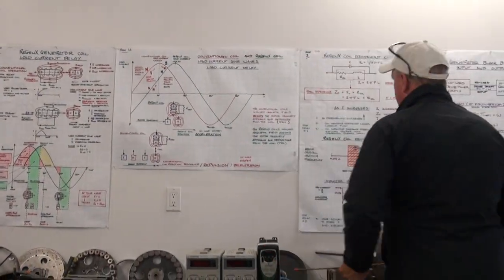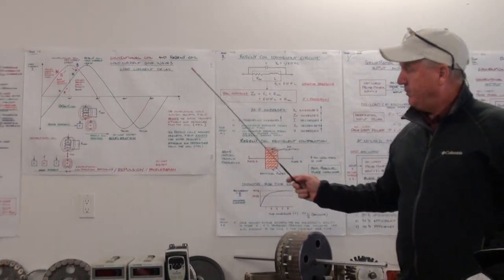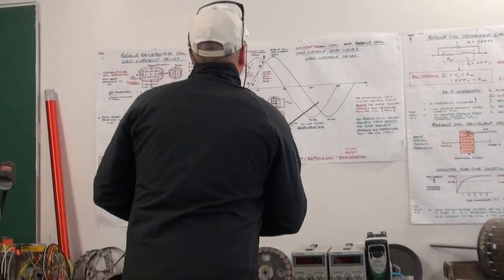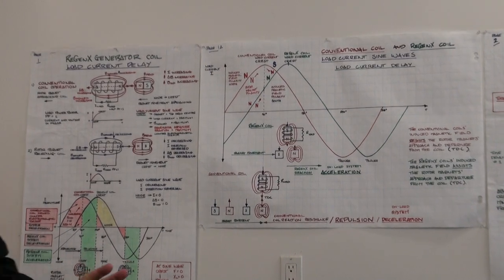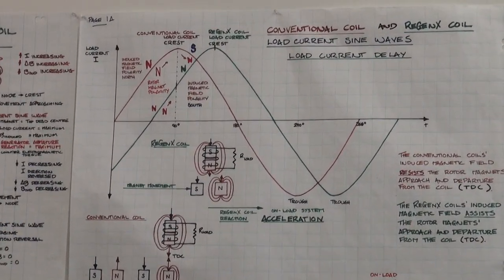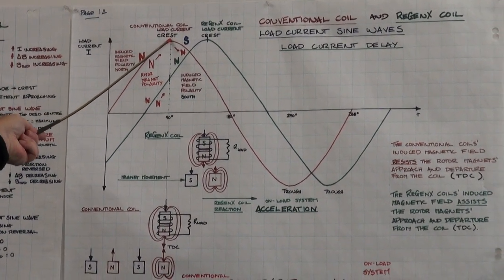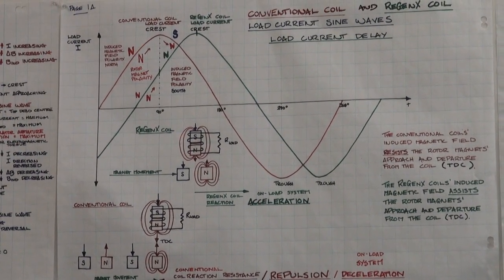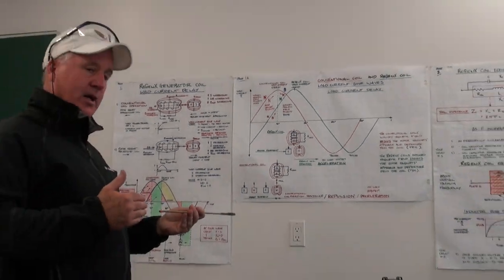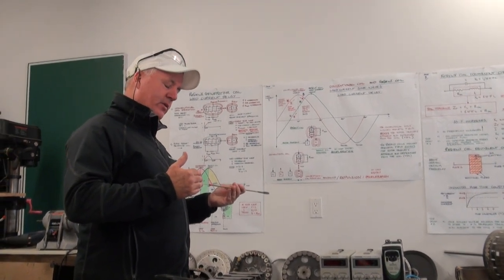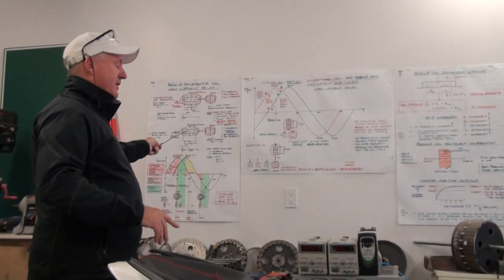The Regenexx coil's load current delay is important to understand how it works. In the conventional coil, the rotor magnet's physical position is established relative to the coil's core. At the crest — top dead center — the rotor magnet is directly aligned with the coil's core; that's when voltage and current are maximum. As the rotor magnet moves away, the current changes direction and polarity, producing a south pole.